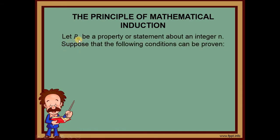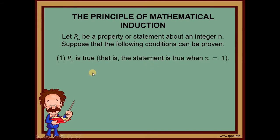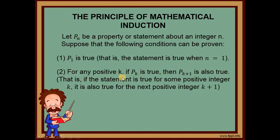Let P sub n be a property or statement about an integer n. Suppose the following conditions can be proven. Part 1: P(1) is true — that is, the statement is true when n equals 1. Part 2: For any positive k, if P sub k is true, then P sub k plus 1 is also true — that is, if the statement is true for some positive integer k, it is also true for the next positive integer k plus 1.